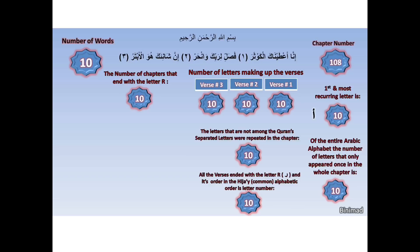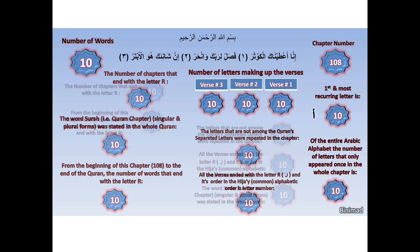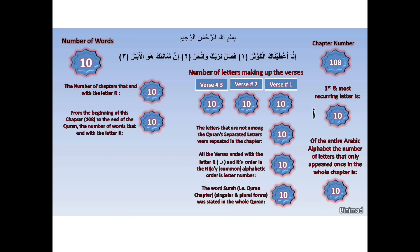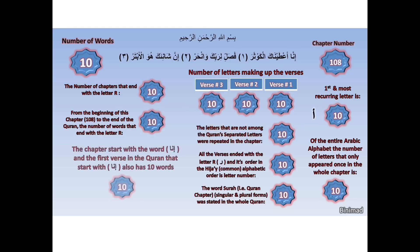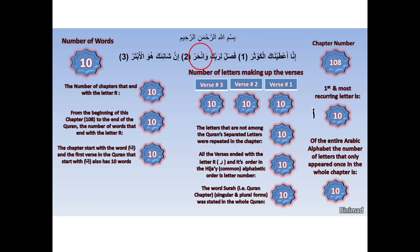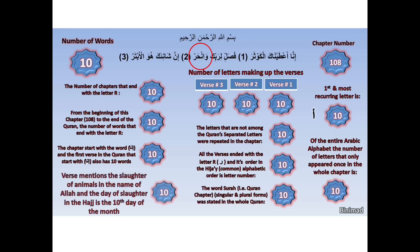It is also interesting that the word Surah — meaning Quranic chapter — in its plural and singular form, was mentioned throughout the Quran ten times. Furthermore, from the start of this chapter until the end of the Quran, the total number of words that end with the letter R are also ten. The middle verse mentions An-Nahar, which is the slaughtering of animals in the name of Allah — and the day of An-Nahar is the tenth day of the month of the pilgrimage Hajj season.